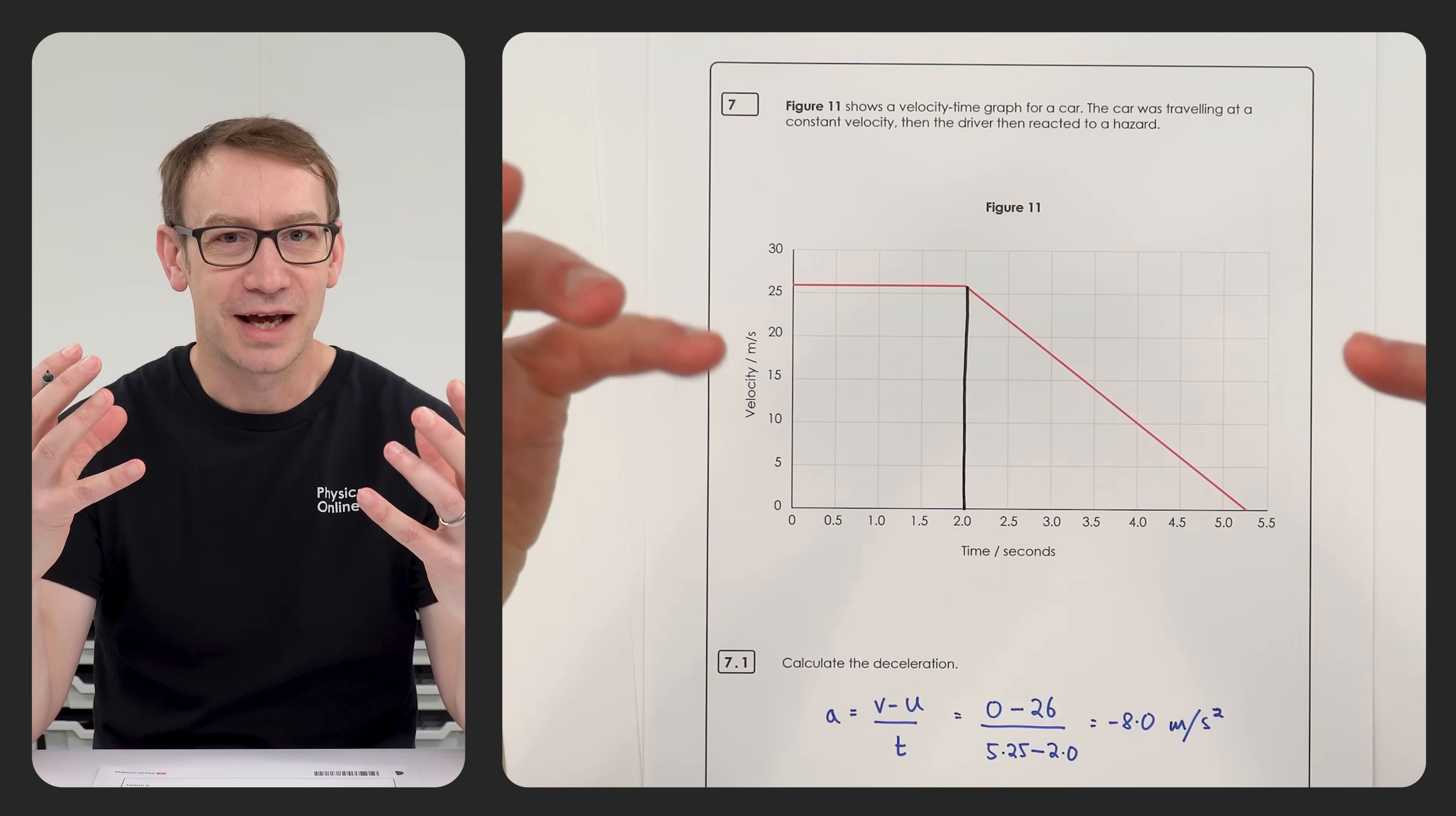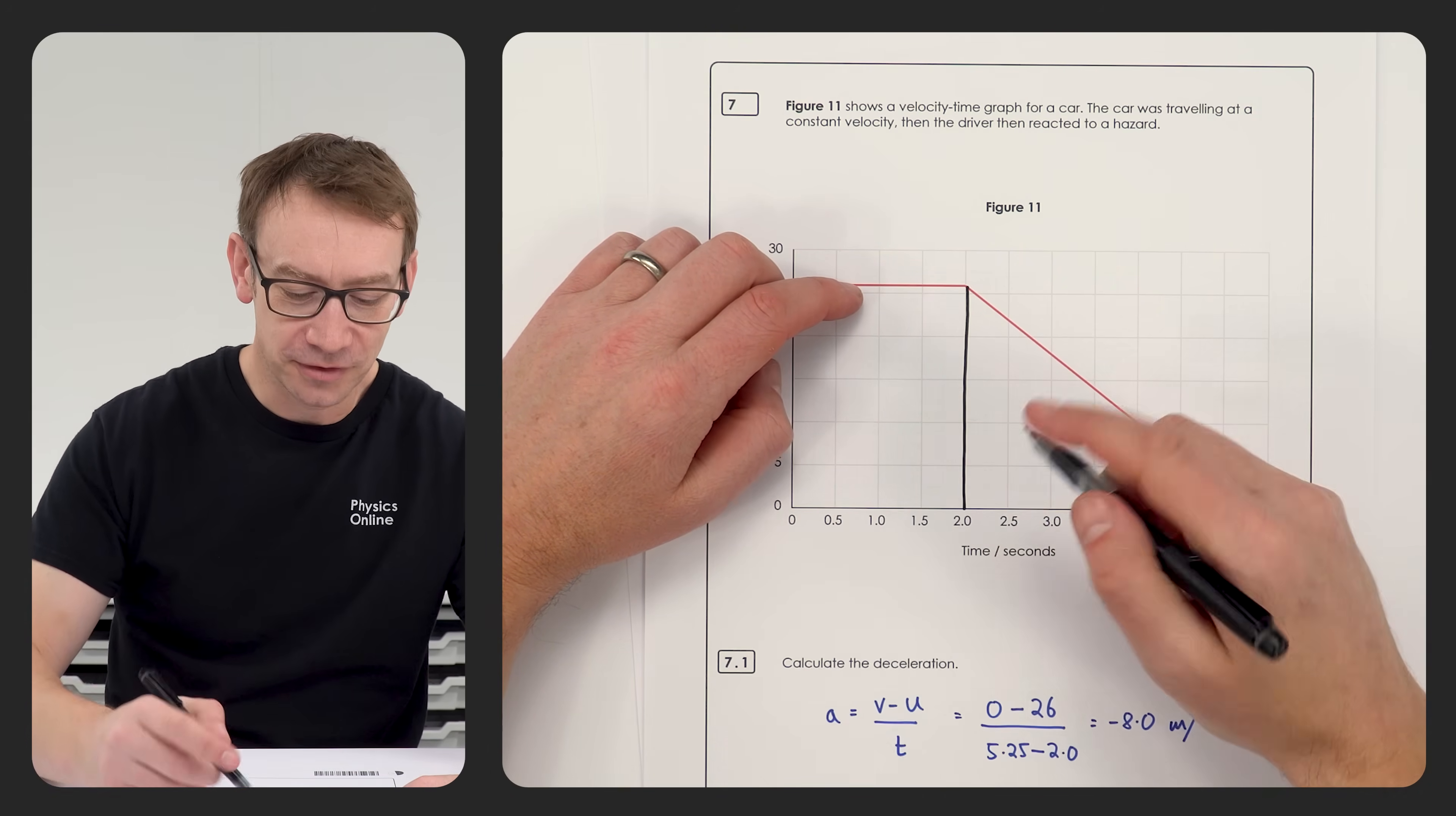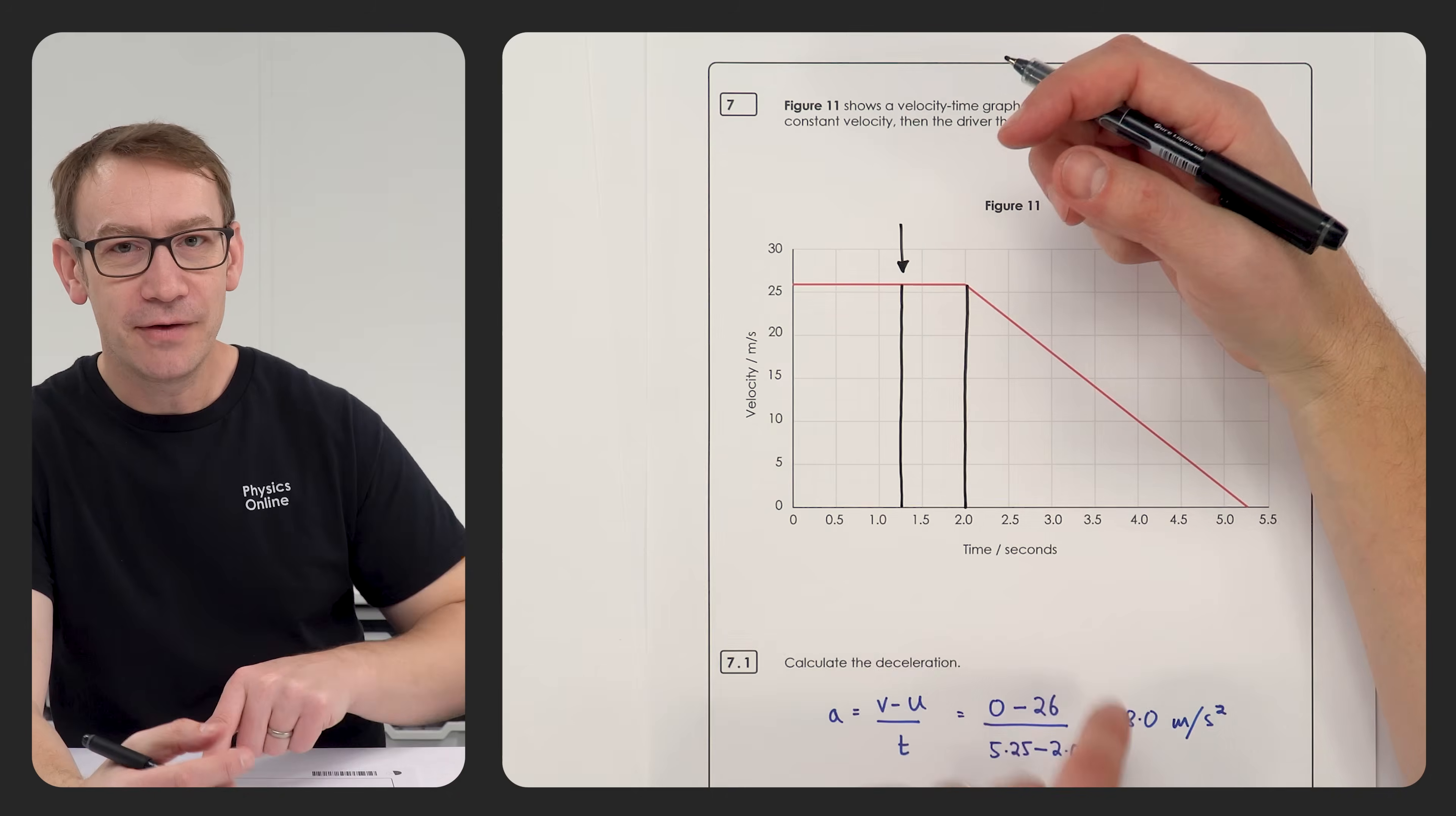They then have to process that and then they apply the brakes. And basically they put on the brakes at two seconds, and that means 0.75 of a second before that at 1.25 seconds is actually when they see the hazard. So this is when they actually see the hazard.